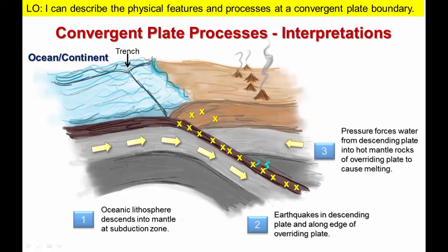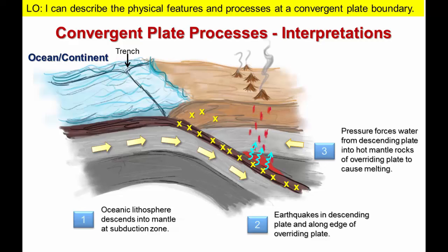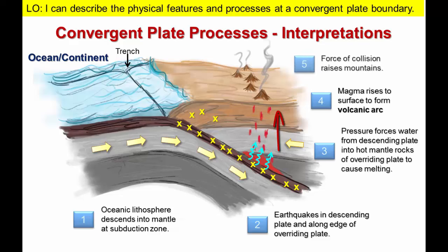As the plate descends into the mantle, it is compressed and the water is squeezed out of the sediment and minerals. At a depth of approximately 100 kilometers, the water enters the much hotter mantle rocks immediately above the subduction zone. The addition of the water causes these mantle rocks to melt. Melting generates magma that rises to the surface to form volcanoes. Finally, the force of the collision produces mountains along the leading edge of the overriding plate.